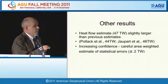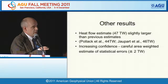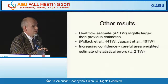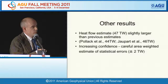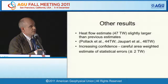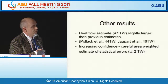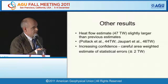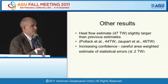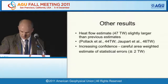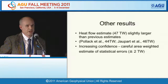Looking at other estimates, our value of 47 terawatts is slightly larger than previous estimates. Pollock et al. estimated 44 terawatts; Yourpower et al., 46 terawatts—with errors of plus or minus 1 and plus or minus 3 terawatts respectively. Using our area-weighted method, we have a statistical error of plus or minus 2 terawatts, which is why we rounded everything to the nearest terawatt.